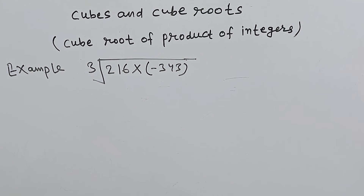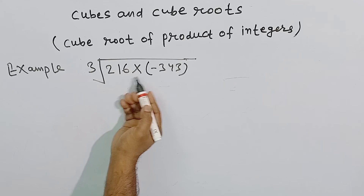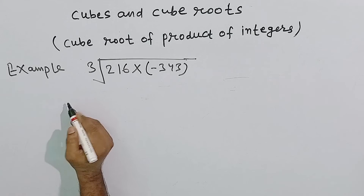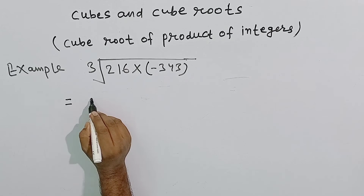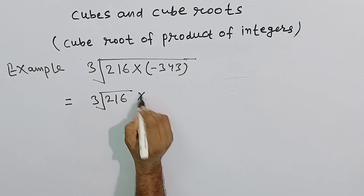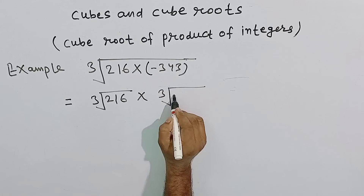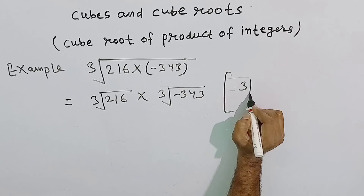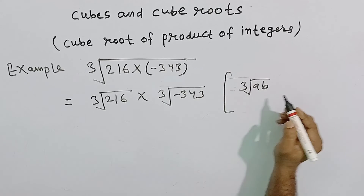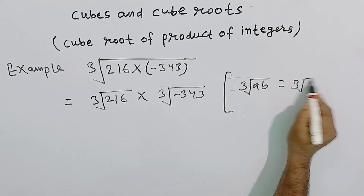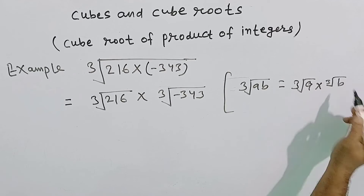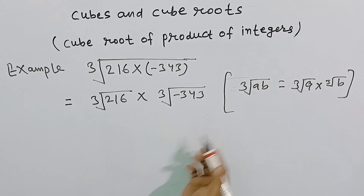चलिए अब हमारे पास और एक example है: 216 और minus 343 के product का cube root निकालते हैं, that is cube root of (216 into minus 343). So is equal to हम लिख सकते हैं cube root of 216 into cube root of minus 343, क्योंकि cube root of a into b, where a and b are two integers, is equal to cube root of a into cube root of b होता है।